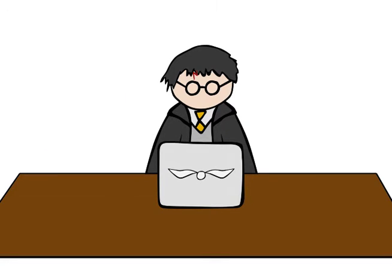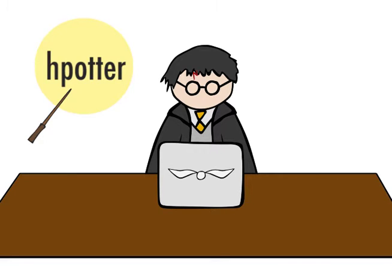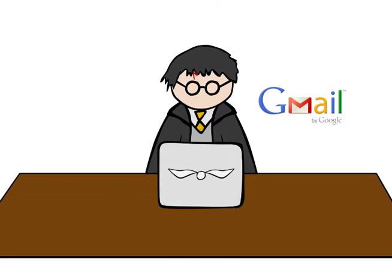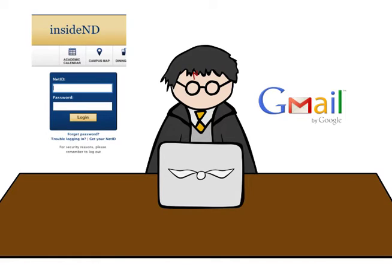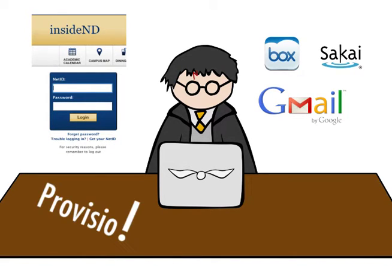When Harry enrolled as a student, the Office of the Registrar entered Harry into their system. This kicked off an IAM process to create Harry's account and enroll him into the services he would need as a student. It created his email account in Google, granted him access to the portal, and allowed him to log into tools such as Box and Sakai. This process is called provisioning.